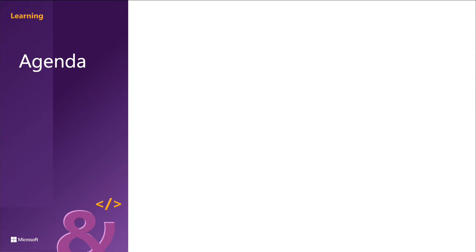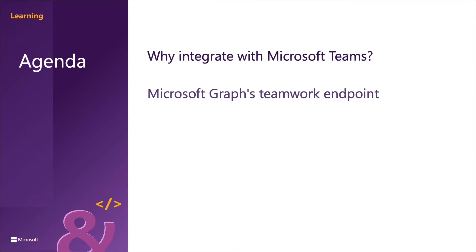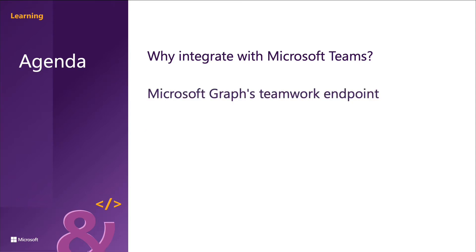Microsoft Graph can be used to integrate your custom applications and processes. Developers can use Microsoft Graph to create new teams and channels, install apps in new teams, and pin apps to a tab in new channels, among many other things. In this first section, we're going to learn how to create an application that interacts with Microsoft Teams using Microsoft Graph, and we're also going to talk about protected APIs in Microsoft Teams.